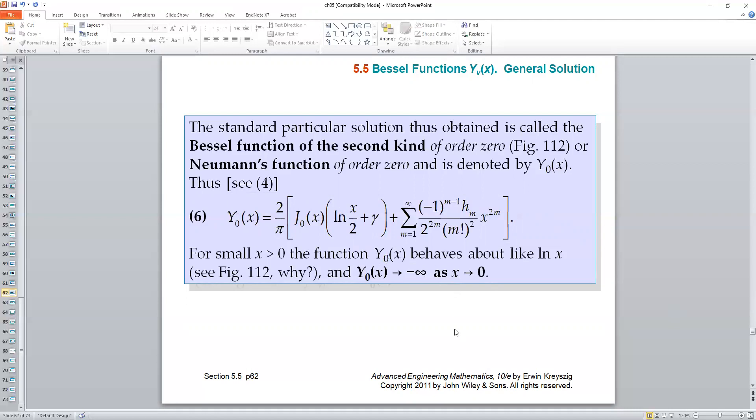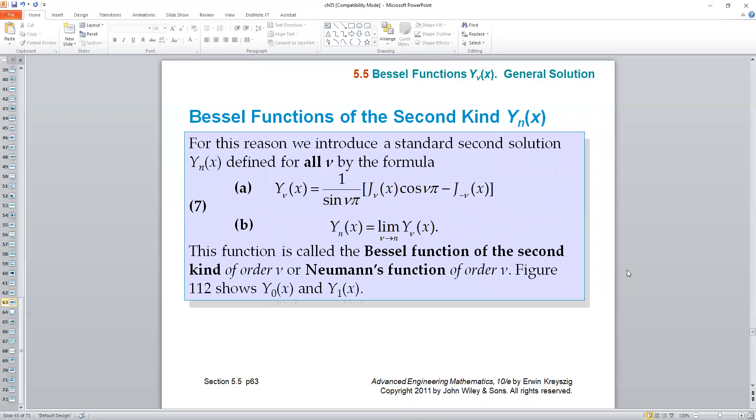And then for any arbitrary nu value, we have to define separately for case 3. The way to do it is by defining Bessel function of the second kind of order 0 in this format.